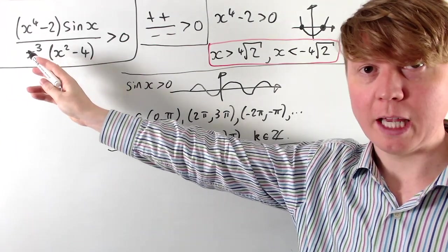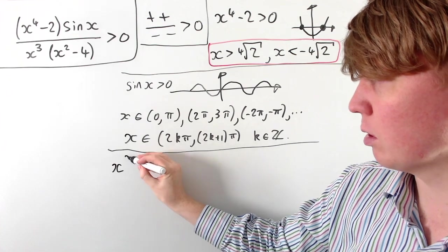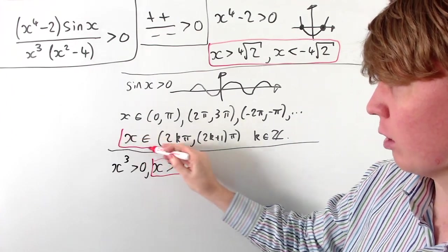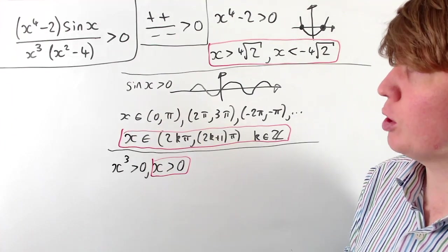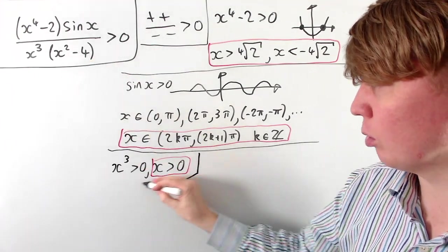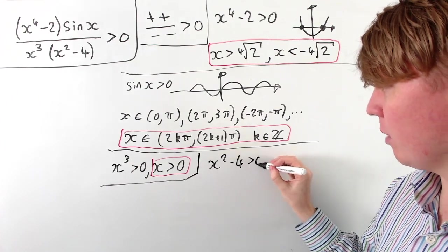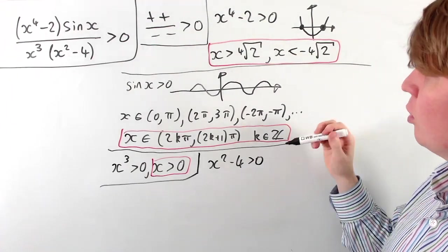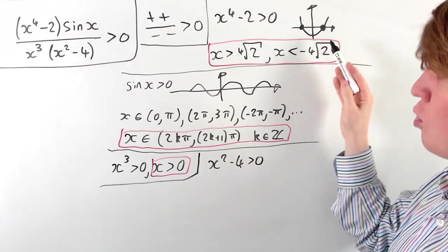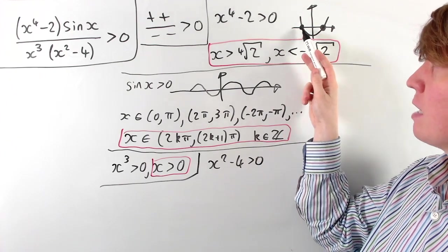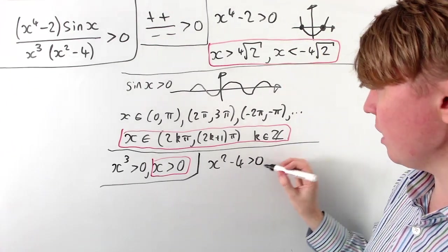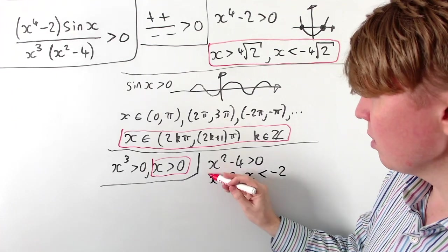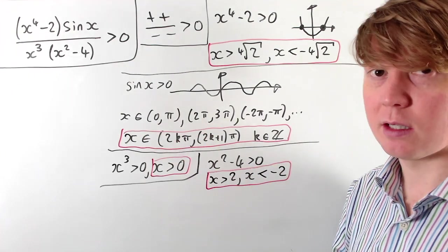Moving on to the third term, x cubed — where is this positive? This one is easy: x cubed is positive exactly when x is positive. And finally, x squared minus four — where is this positive? Similar to before, we need x squared to be bigger than four, so x is bigger than two going to the right, and x is less than negative two going to the left. So x squared minus four is positive exactly when x is greater than two or x is less than negative two.